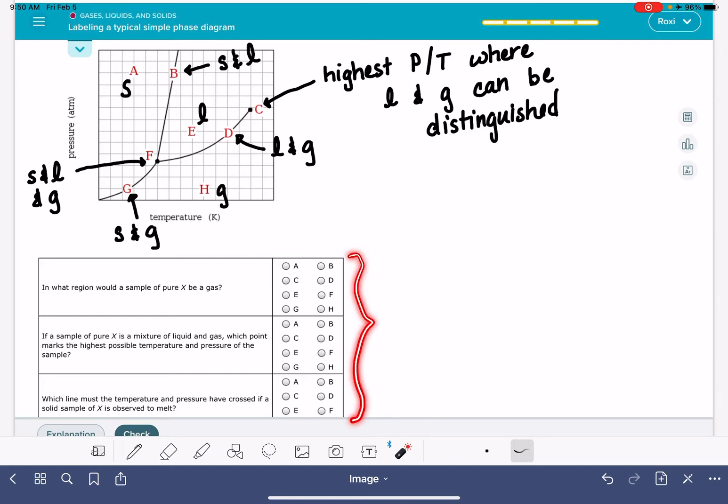Let's take a look at the three questions. Some of the questions down here are going to be pretty straightforward, like the first question here. It wants to know what region would this be a gas. So gases are in region H on this diagram, so there we go.